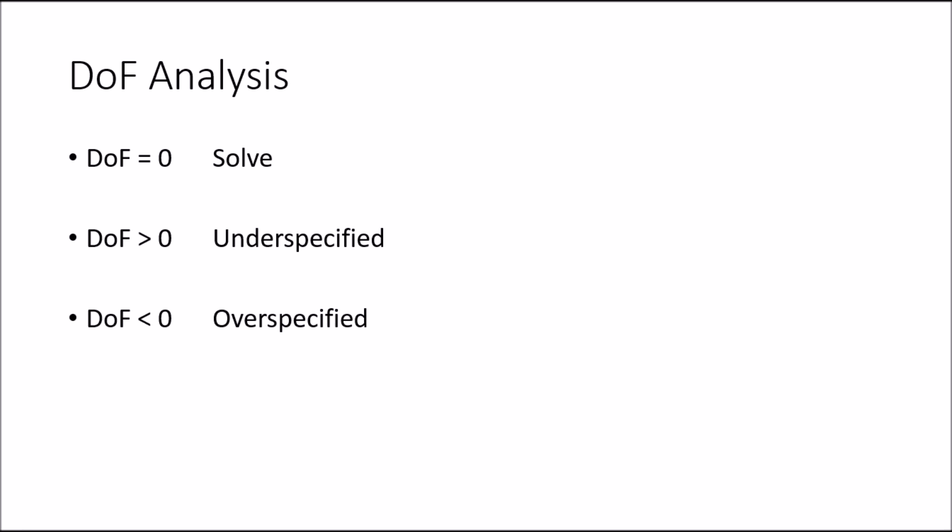When we calculate the degrees of freedom for a particular system, there are three potential outcomes. If degrees of freedom equal zero, we can solve the problem — we have the necessary equations to relate the unknowns. If degrees of freedom are greater than zero, we have more unknowns than equations and an underspecified system, so we cannot solve for all unknowns without more information. If degrees of freedom are less than zero, we are overspecified — we have more equations than unknowns.